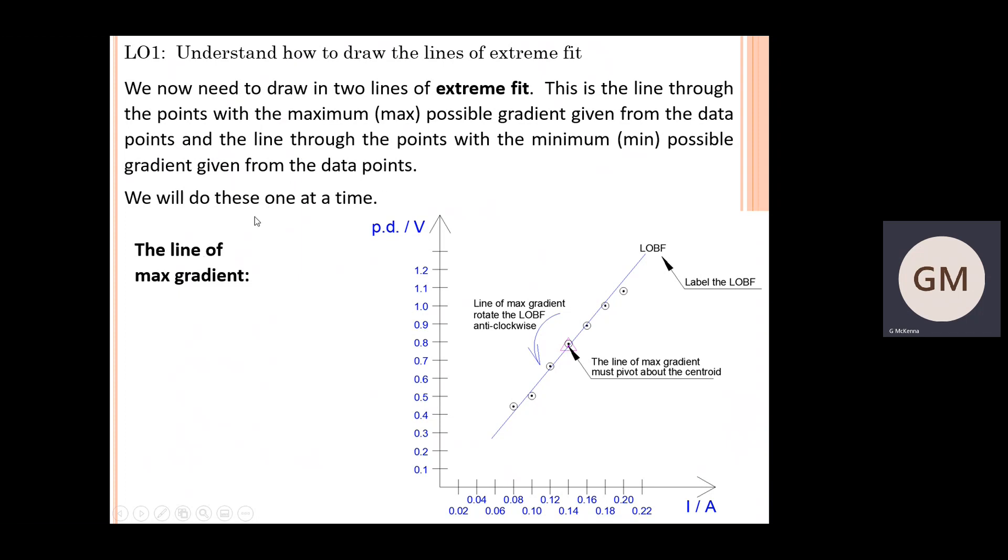We will do these one at a time. First of all, we're going to look at the line of max gradient. You can see from this photograph on the right-hand side here, we've got our line of best fit plotted as a solid line. Make sure you label that line of best fit when you're putting in these two extreme lines.